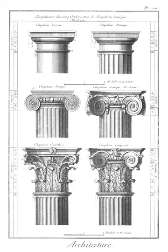Rear vault: vault of the internal hood of a doorway or window to which a splay has been given on the reveal. Sometimes the vaulting surface is terminated by a small rib known as the scoinsen rib, and a further development is given by angle shafts carrying this rib, known as scoinsen shafts.